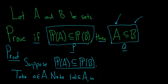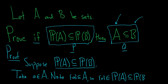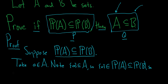This means that the set containing little a is an element in the power set of A, which is a subset of the power set of B. So this implies that the set containing little a is an element in the power set of B.